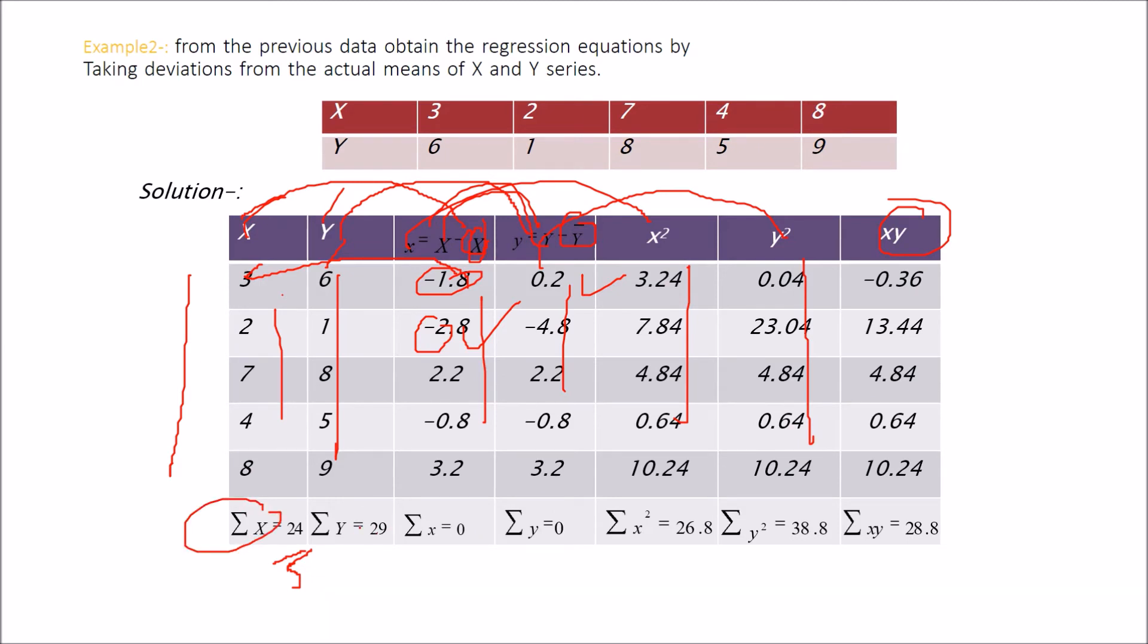So now sigma X, you have to add these. Sigma Y, sigma X and sigma Y, sigma X square, sigma Y square, sigma XY. These are capital X, capital Y. These are small x, small y.